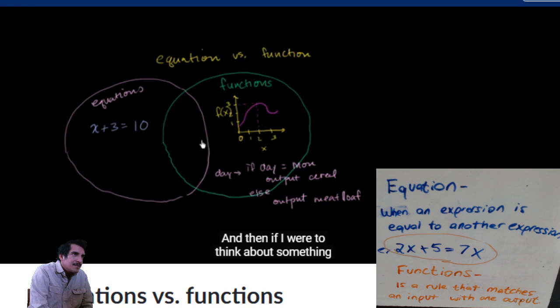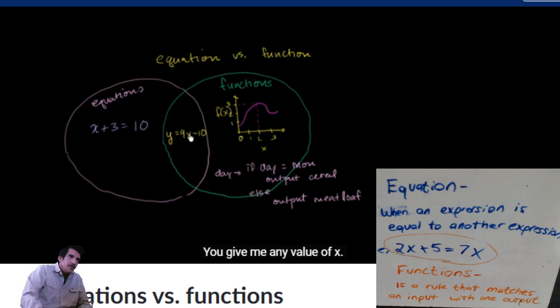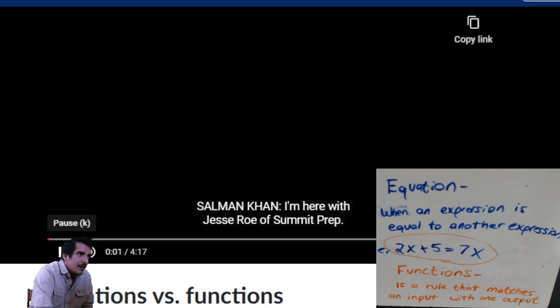If I think about something that could be an equation or a function - an equation can be used to define a function. For example, y equals 4x minus 10 is a potential definition for y as a function of x. You give me any value of x and I can find the corresponding value of y.